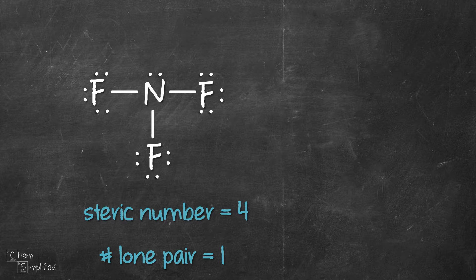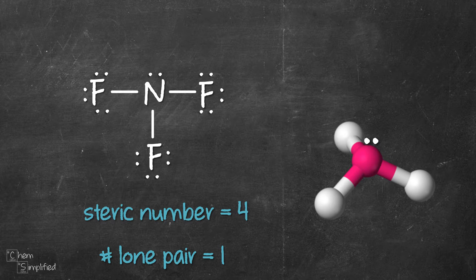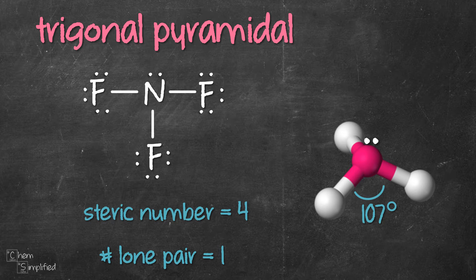Now these three groups and one lone pair will arrange themselves so it looks like this. The bond angle is 107 degrees. This shape we call it trigonal pyramidal.